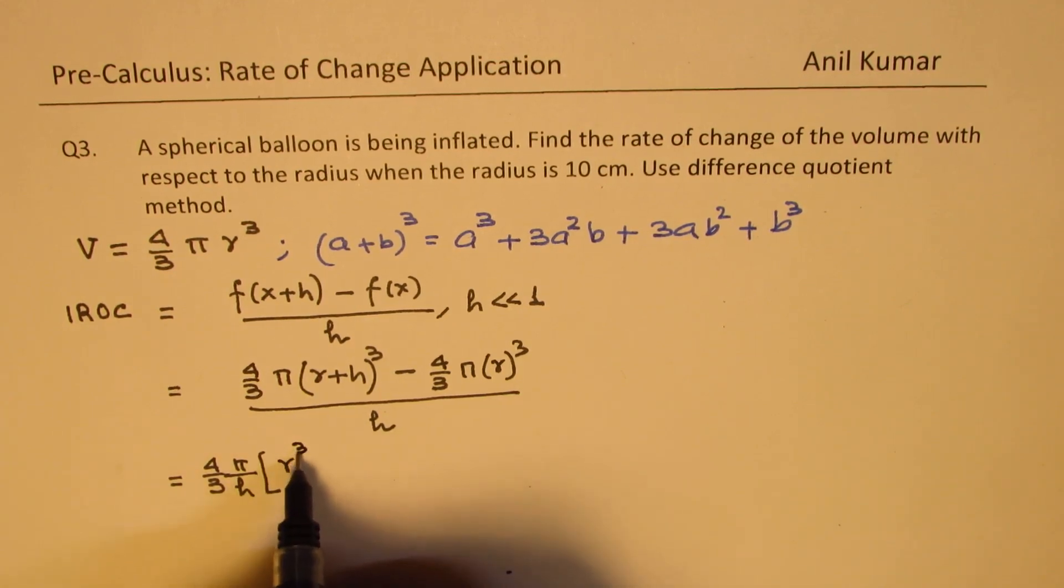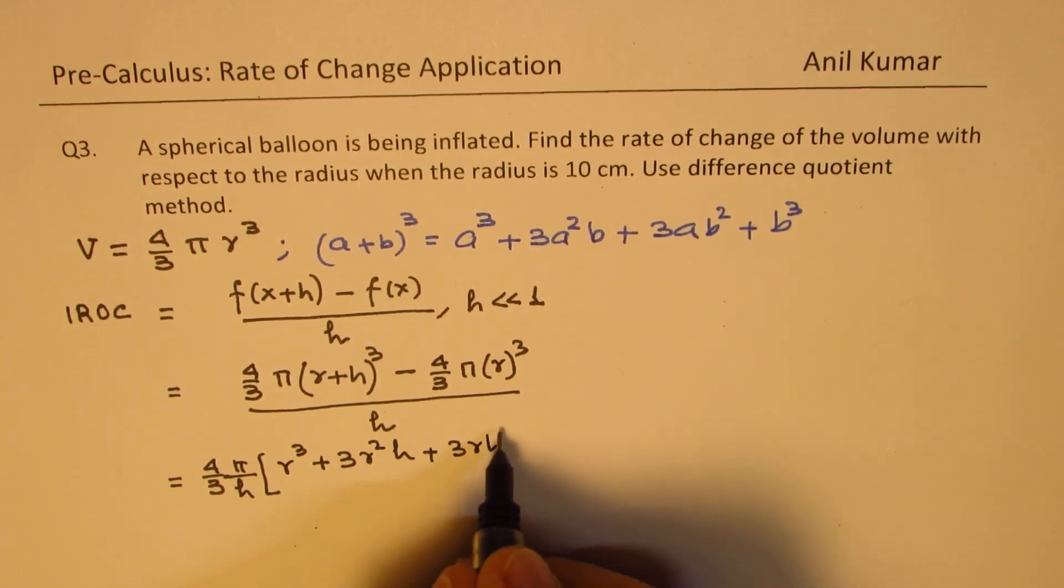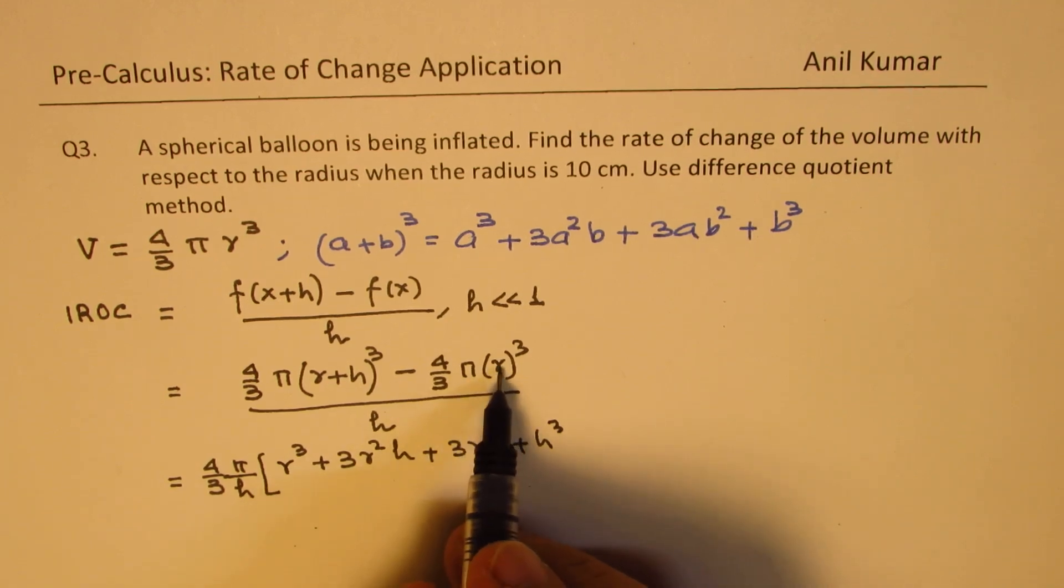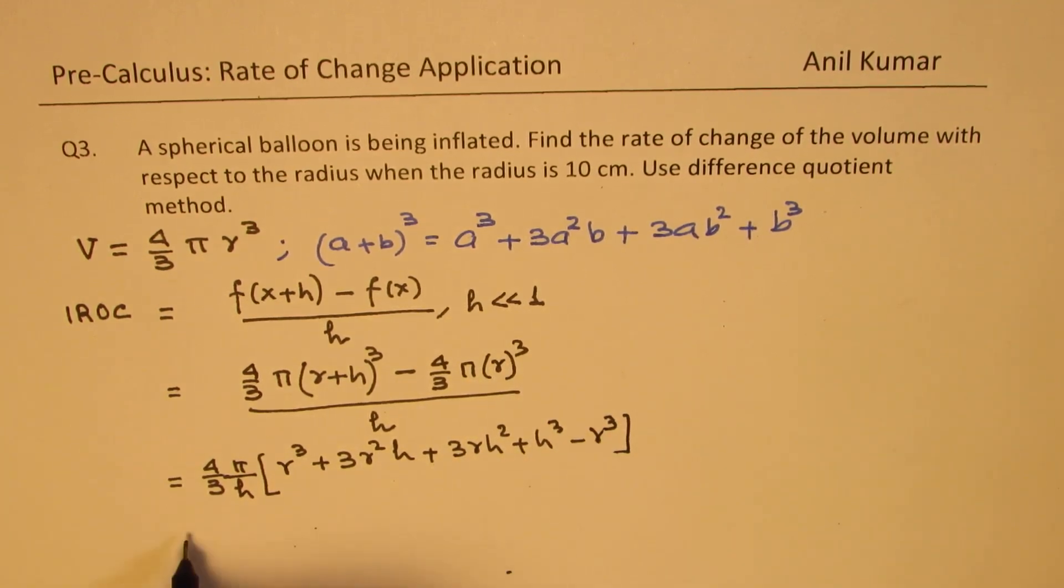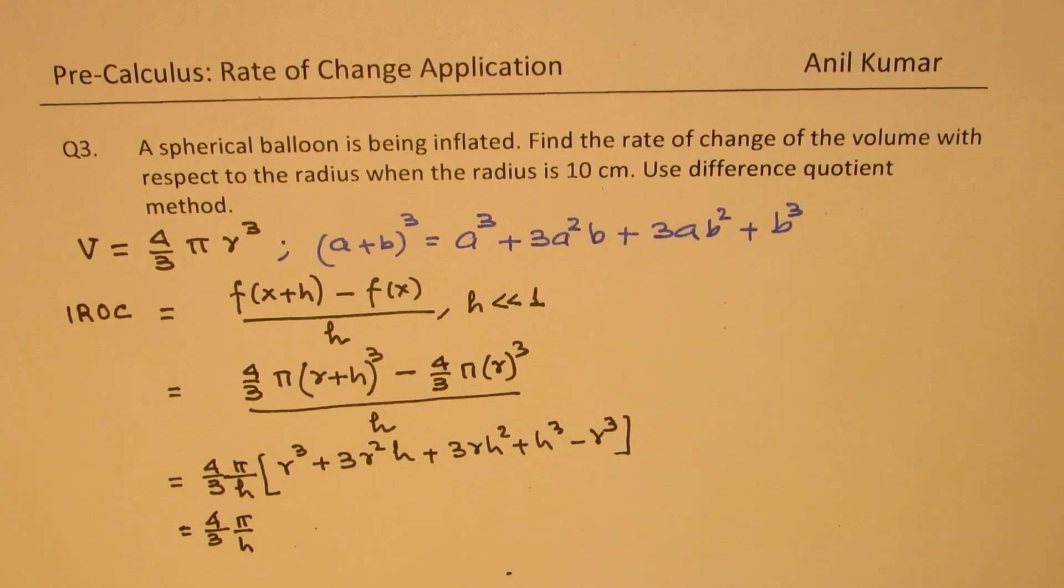So we have r cube plus 3 r square h plus 3 r h square plus h cube. And here we are left with minus r cube. So that gives you 4 by 3 pi over h. Now you can see r cube and r cube will cancel.